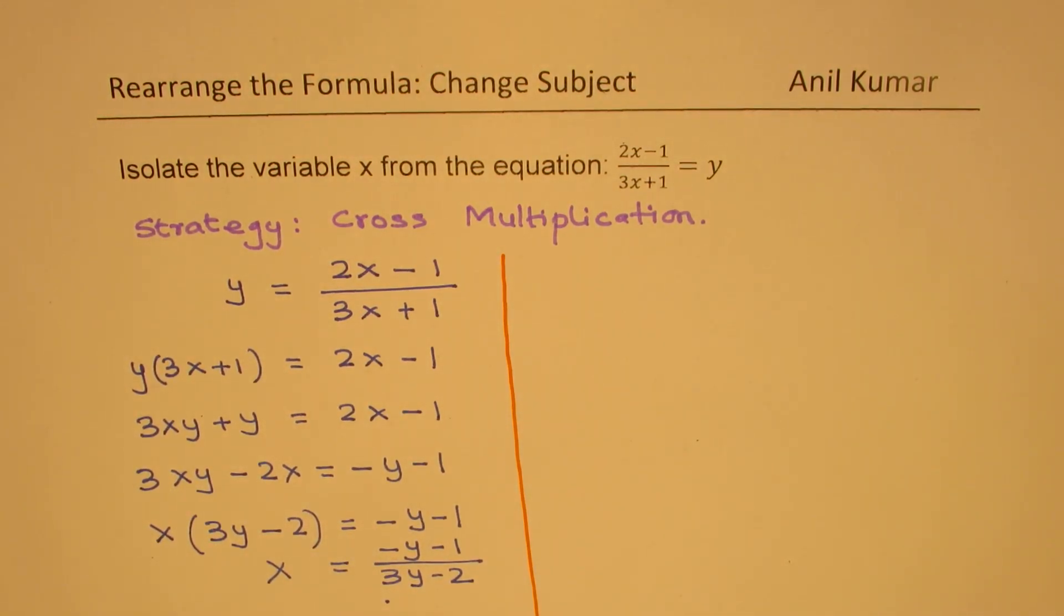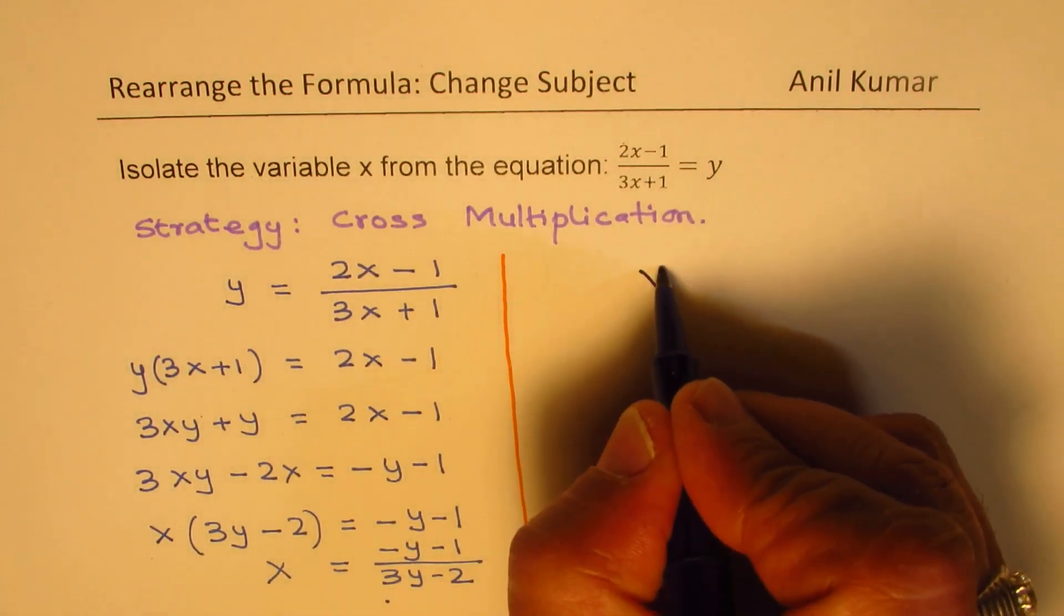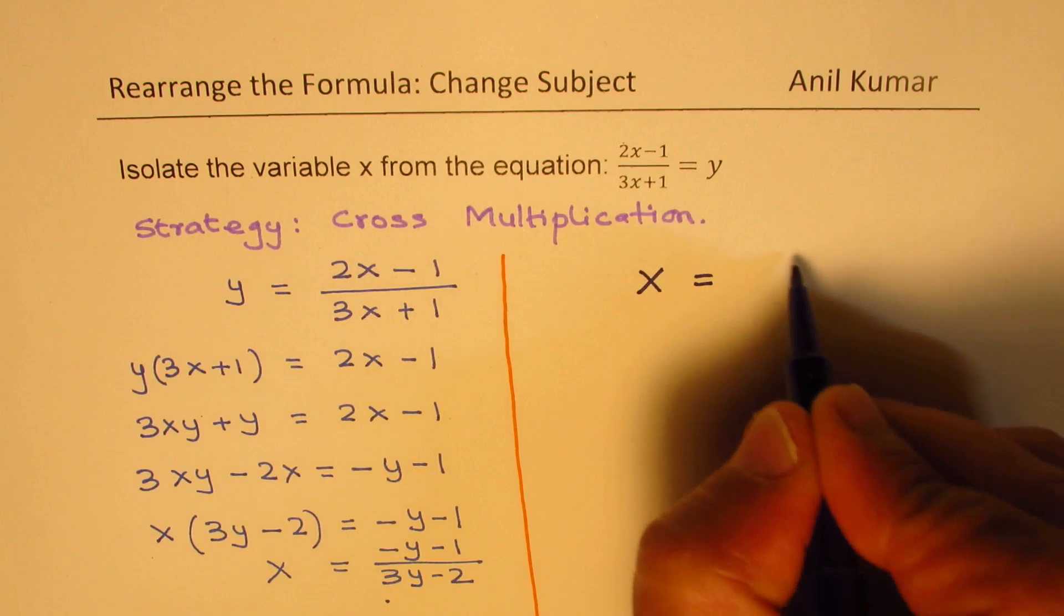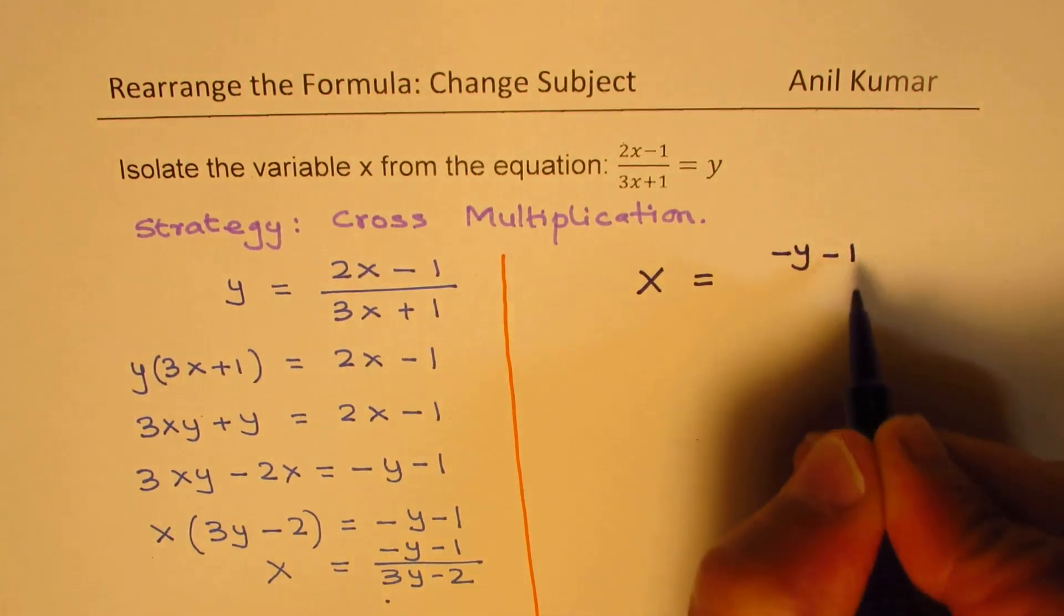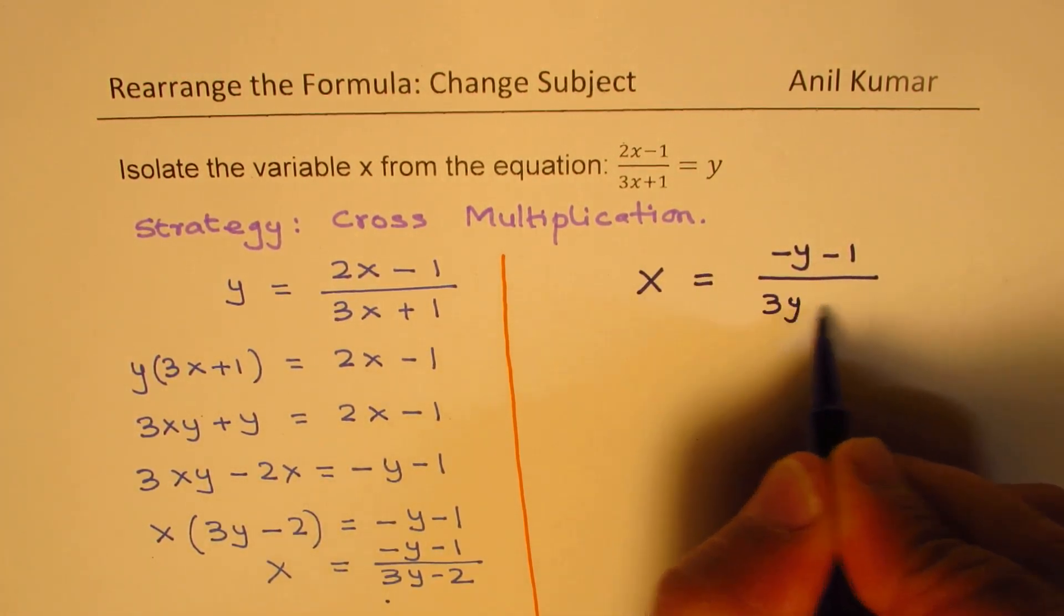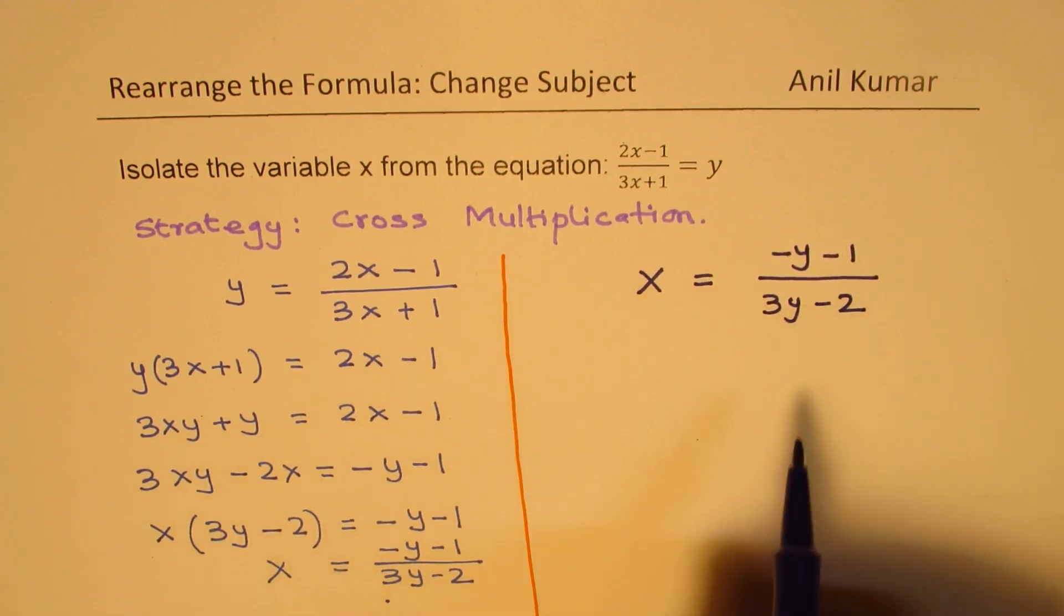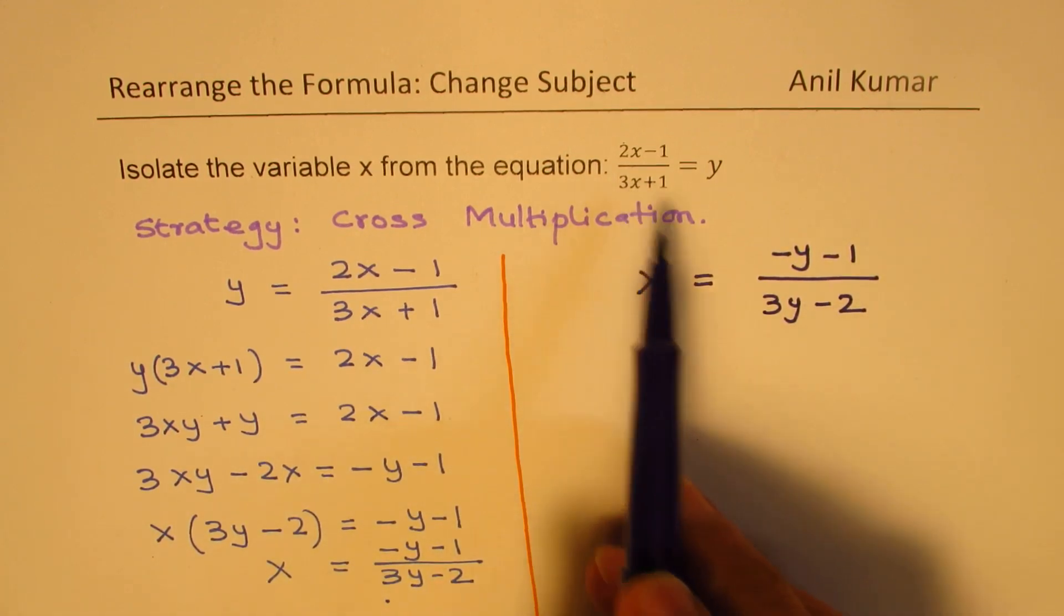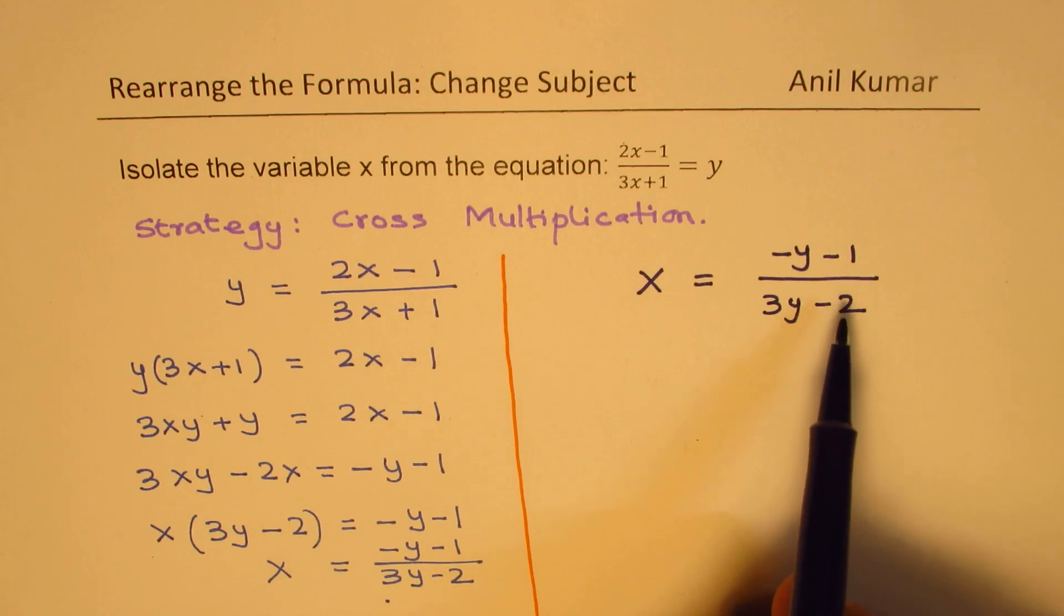Perfect. Now, another important thing to understand here is that we got the solution as x equals minus y minus 1 over 3y minus 2. Now, in a multiple choice question, this expression x equals could be written in many different ways.